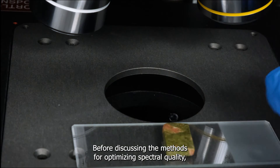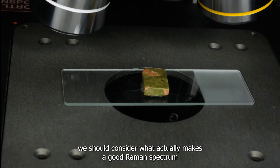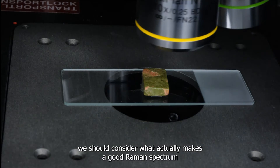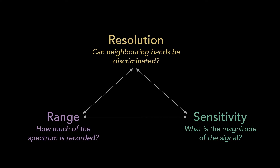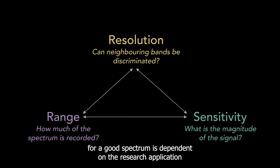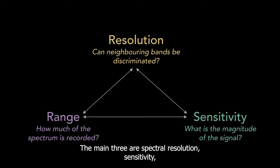Before discussing the methods for optimizing spectral quality, we should consider what actually makes a good Raman spectrum. The appropriate threshold for a good spectrum is dependent on the research application, however there are key parameters that must always be considered. The main three are spectral resolution, sensitivity, and range.